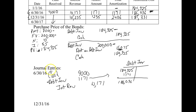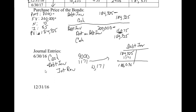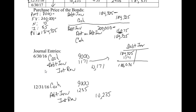On December 31, 2016: debit Cash $9,000, debit Debt Investment $1,235, credit Interest Revenue $10,235. We could add that to the T-account and it would match the $187,331 shown in the table. This process continues on and on until the end of the life of the bonds, assuming we hold them to maturity. At the end of the bond's life, the Debt Investment account would be the full $200,000 and we receive the cash back.